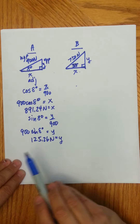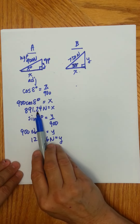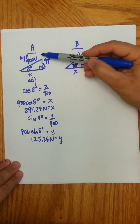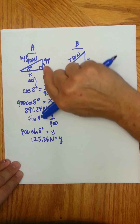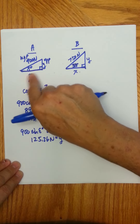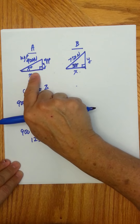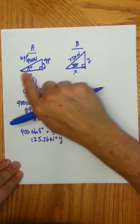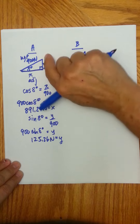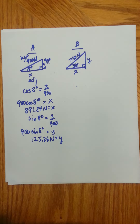In the horizontal direction we have 891.24 newtons, and in the vertical we have 125.26 newtons. There is no part of the vertical that is in any way affecting the horizontal, and the same thing is true for the horizontal — it's purely horizontal. That's why you can separate them and then add them.